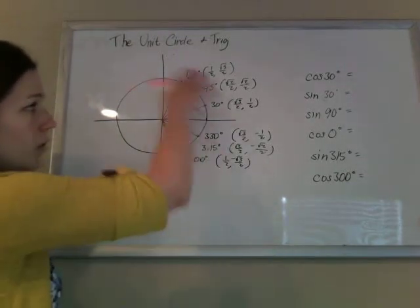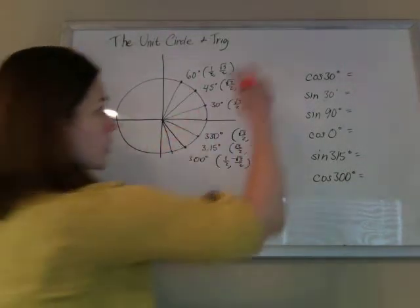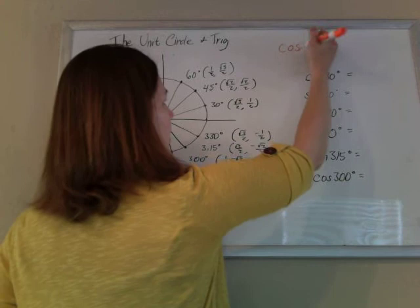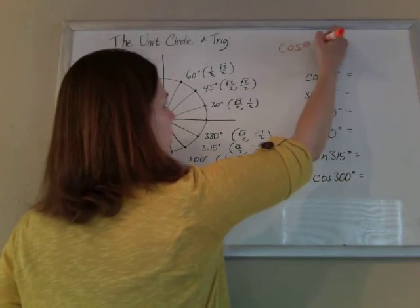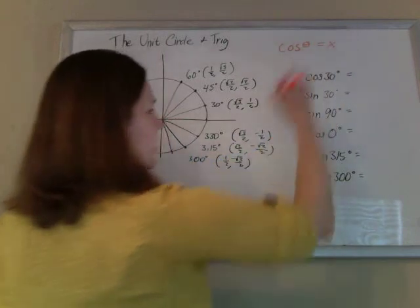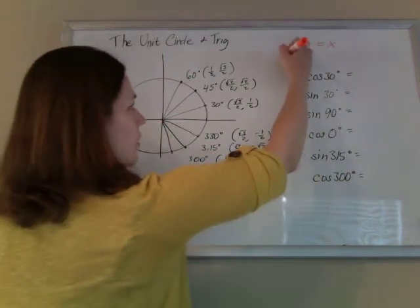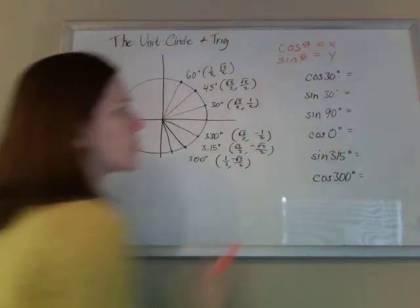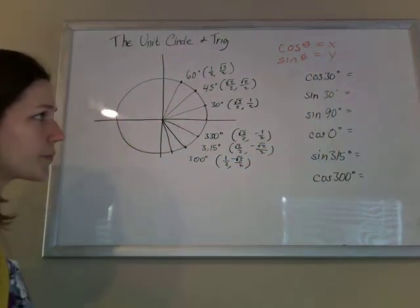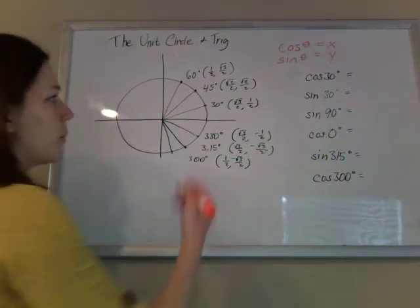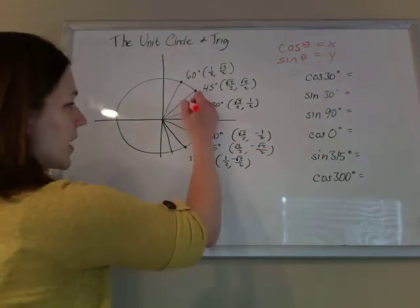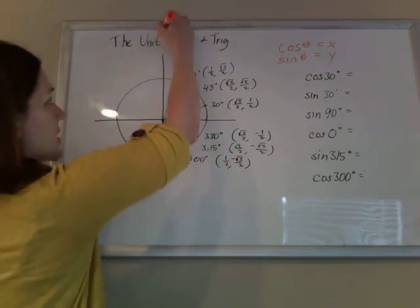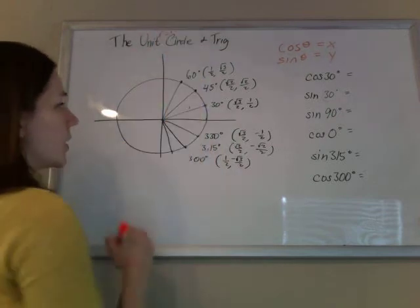On a unit circle, the cosine of an angle is the x-value, and the sine of an angle is the y-value. We know this because the hypotenuse is 1 — it's a unit circle, which means it has a radius of 1, unity.